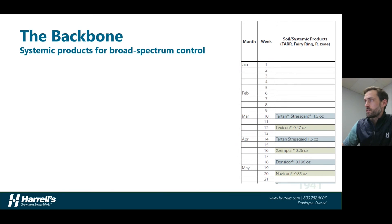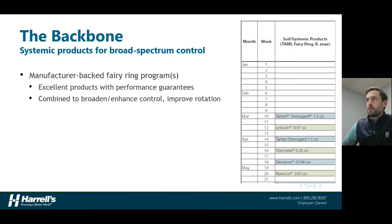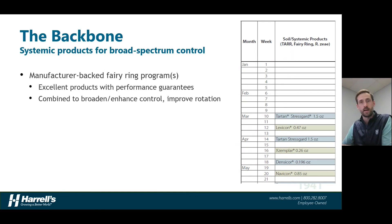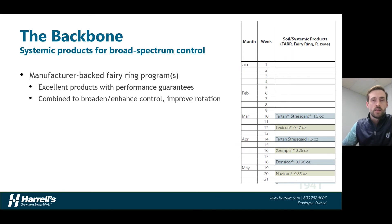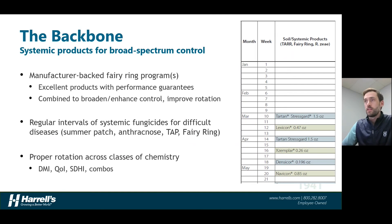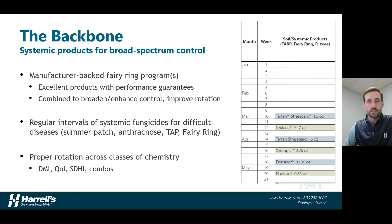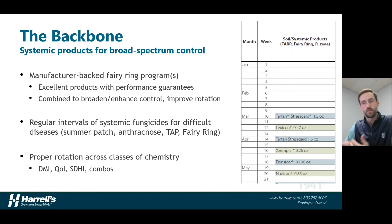The backbone of the programs are our systemic products — you can see Tartan and Lexicon, for example. The reason we selected these is that they are manufacturer-backed programs. These are programs guaranteed by the manufacturers, so if you apply them as described to control fairy ring or another set of diseases, the manufacturers back up or guarantee the efficacy. This also ensures that when we put these programs together, there is a proper rotation across classes of chemistry, following guidelines recommended by university extension agents suggesting that we shouldn't apply fungicides without rotating active ingredients.